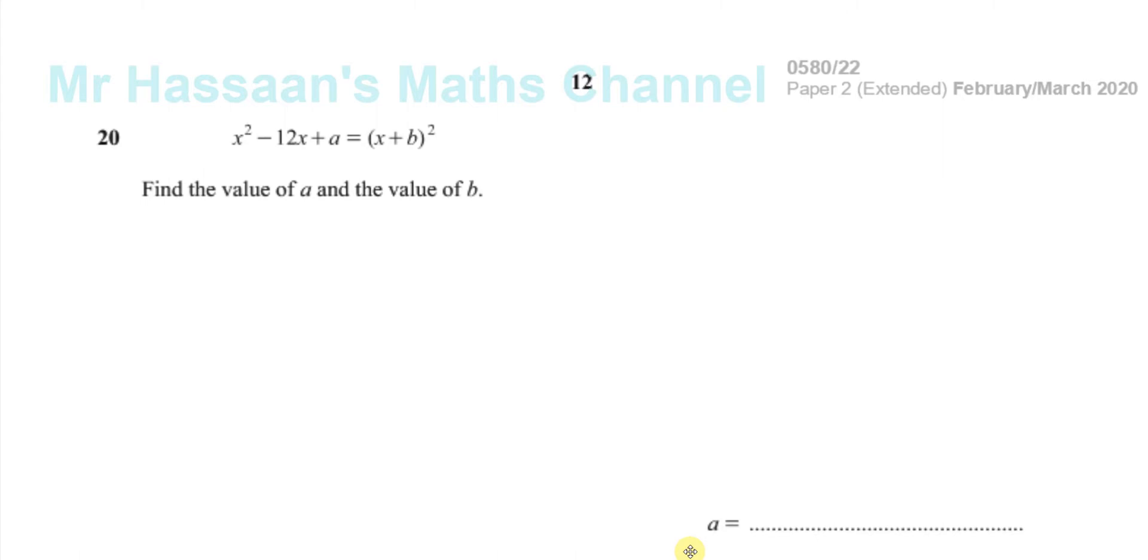This is a question about identities, algebraic expansion, or even completing the square. There's different ways of doing this question. I'll show you two different ways of doing it.